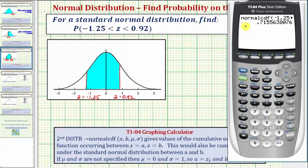...this gives us the area of the shaded region, which is also the probability that z is greater than negative 1.25 and less than 0.92. So as a decimal, the probability is approximately 0.7156.